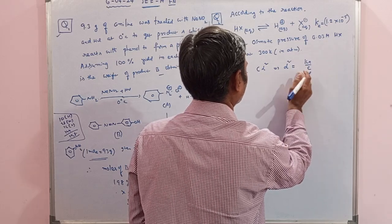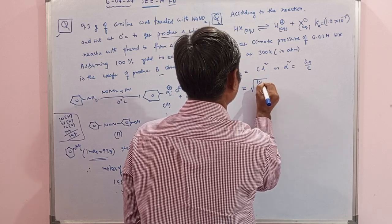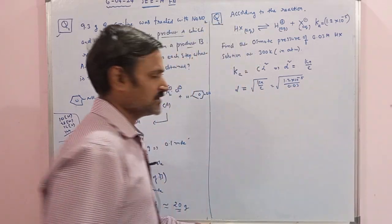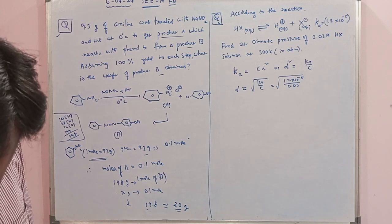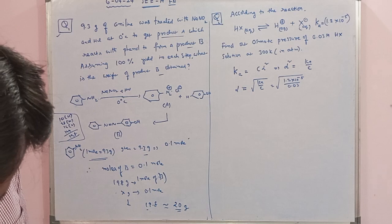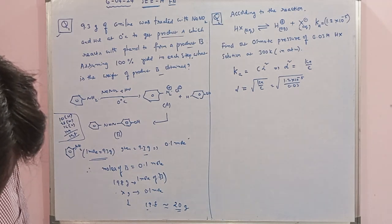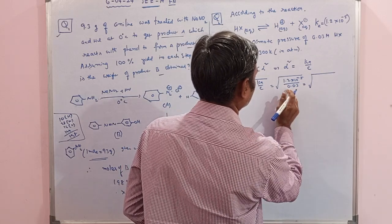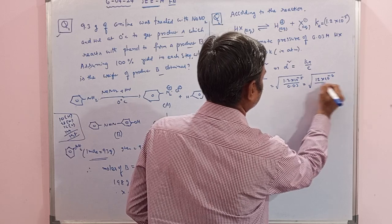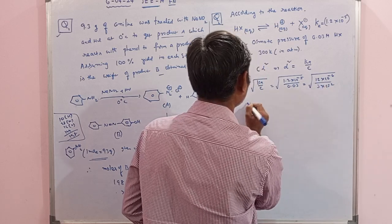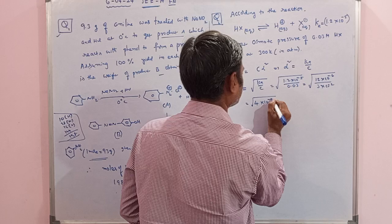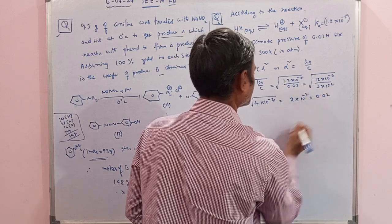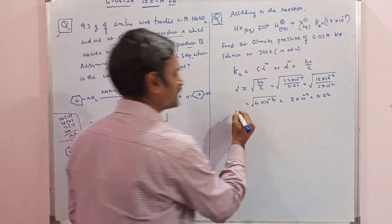From this you can find alpha squared equals Ka by C. Here the concentration given is 0.03. So alpha equals square root of Ka by C. That is Ka is 1.2 × 10^-5 divided by concentration 0.03. After verifying this, you will get the alpha answer very close to 0.02. Let me show this calculation: square root of 12 × 10^-6 divided by 3 × 10^-2. So 12 divided by 3 is 4, giving root of 4 × 10^-4. If 4 comes outside, it becomes 2, and 10^-4 becomes 10^-2, which is 0.02. So alpha value is 0.02.